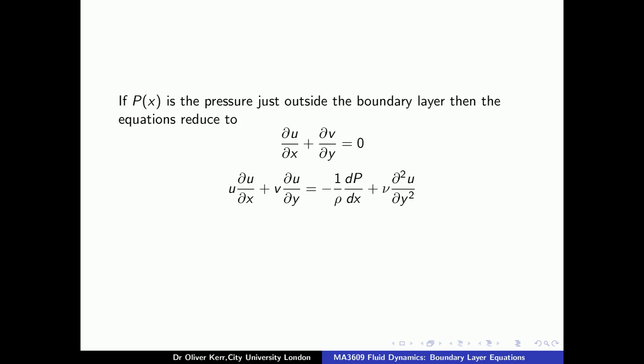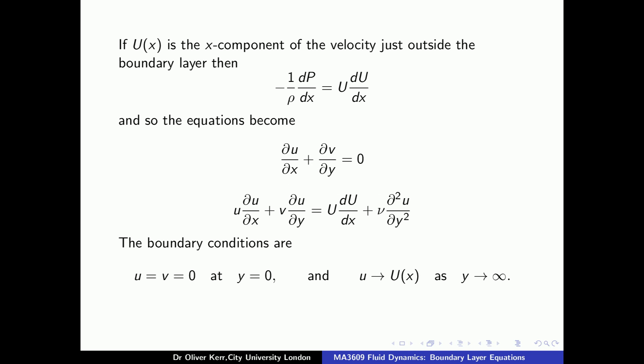As the pressure is uniform across the boundary layer, it will be the same as that of the exterior flow just outside the boundary layer. We will denote this pressure using a capital P, which will be a function of x only. We can replace the partial derivative of P with a normal derivative. In the exterior flow, which is essentially inviscid and parallel to the wall, we find that just outside the boundary layer we will have the balance that U dU/dx equals minus one over rho times dP/dx. This means we can replace the pressure term in the x component of the boundary layer equation with U dU/dx. We use a capital U for the x component of the velocity just outside the boundary layer. Thus we end up with the boundary layer equations.